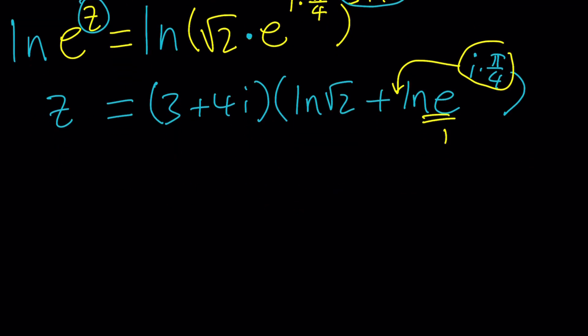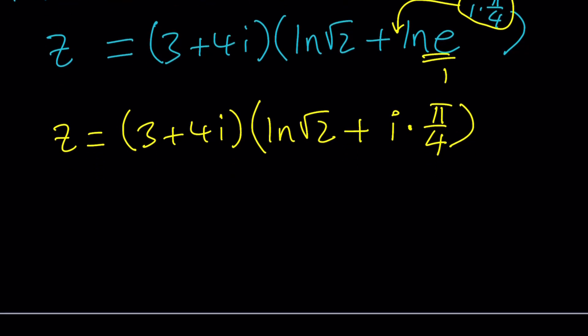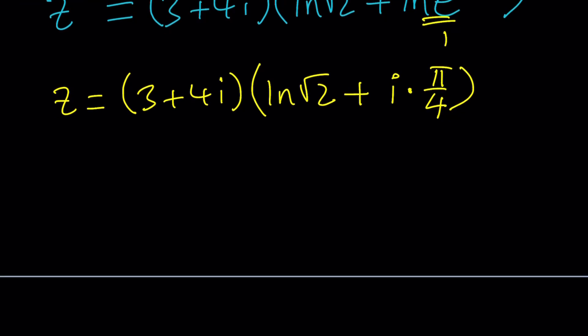So this is going to become the following. Z equals 3 plus 4i times ln root 2 plus i times pi over 4. And again, instead of writing this as pi over 4, you could replace it with pi over 4 plus 2 pi n, which is adding multiples of 2 pi. But let's just go with the principal branch. Let's keep it simple.